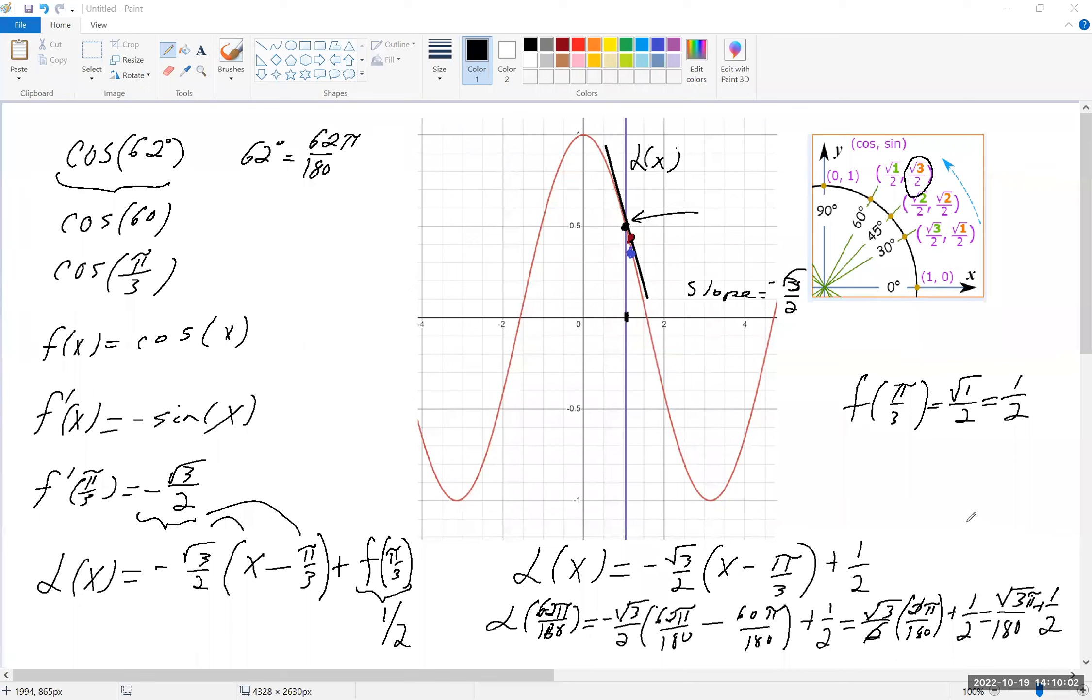Which is 0.470 if you round off. So this is approximately 0.470.